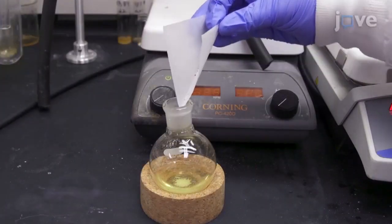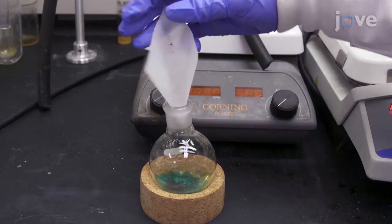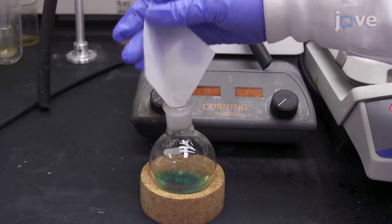The reaction should change from a light yellow color to emerald green immediately after the cobalt(II) chloride hexahydrate is added.